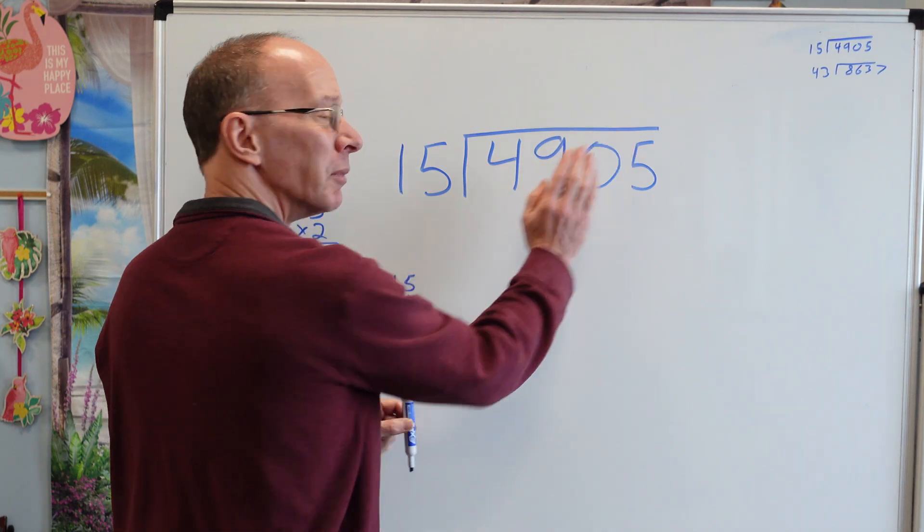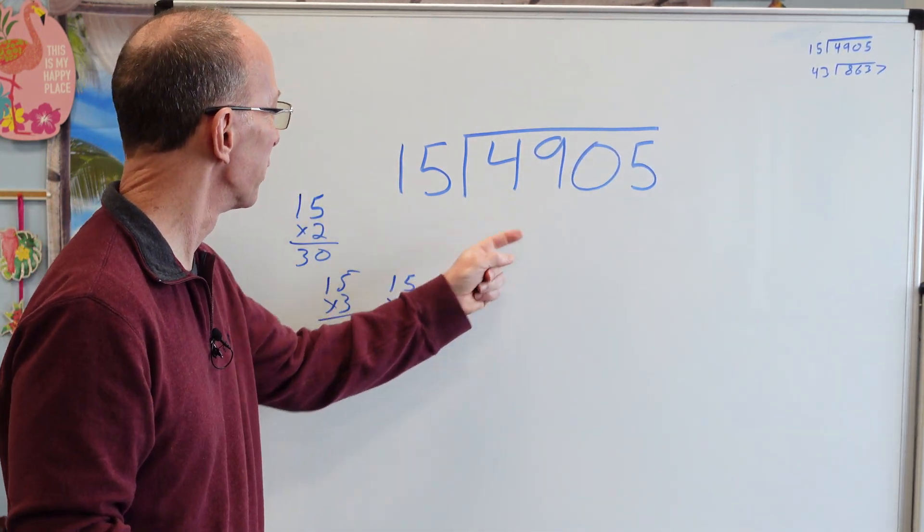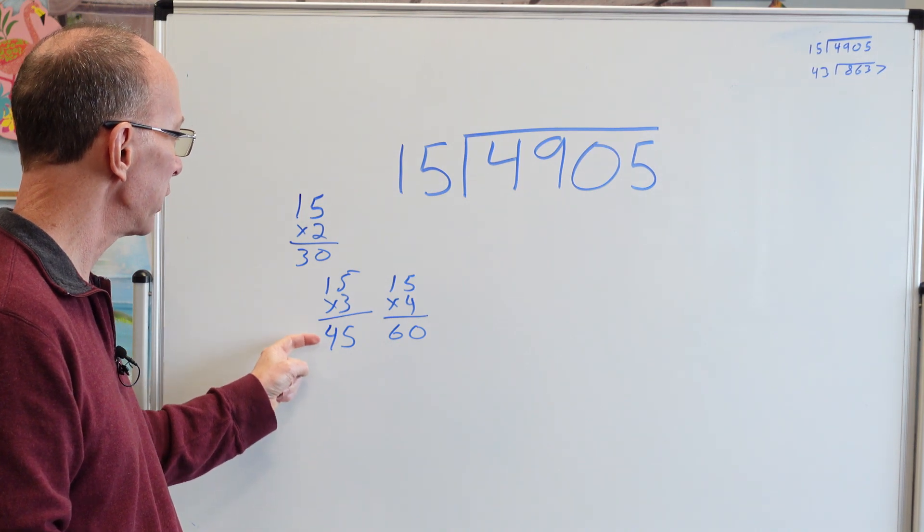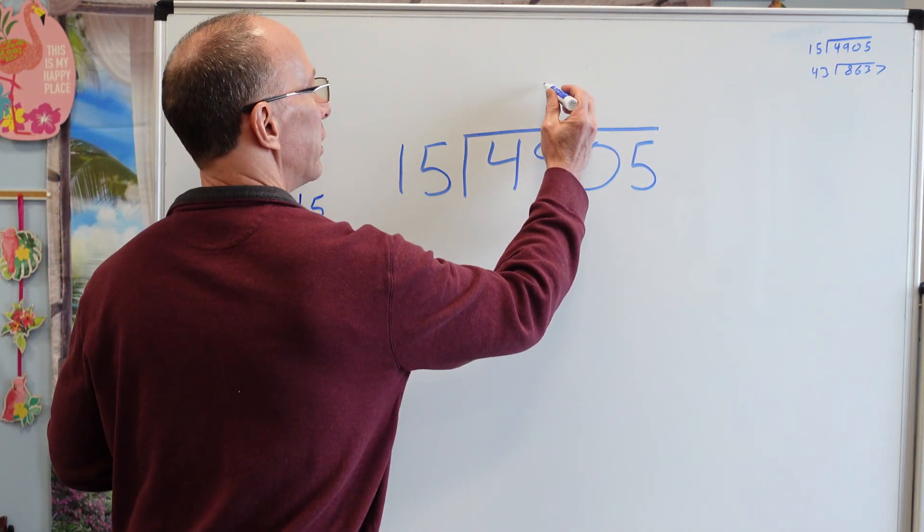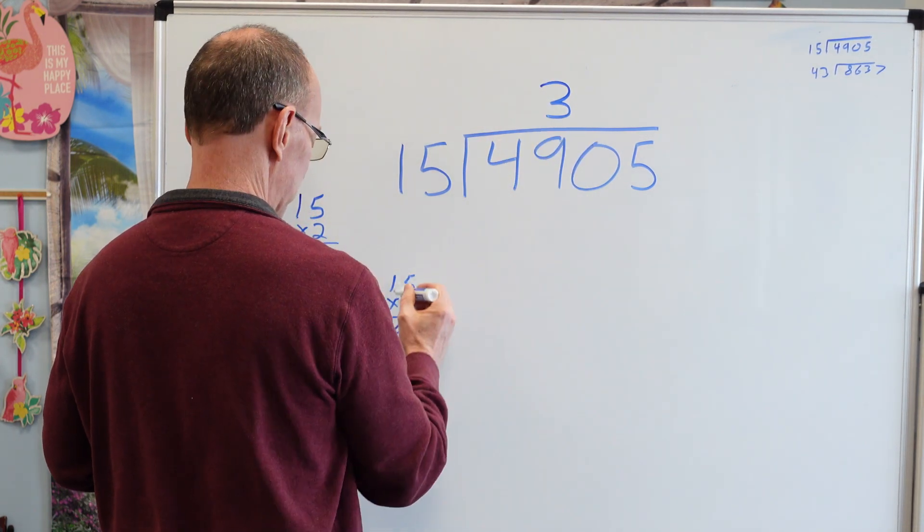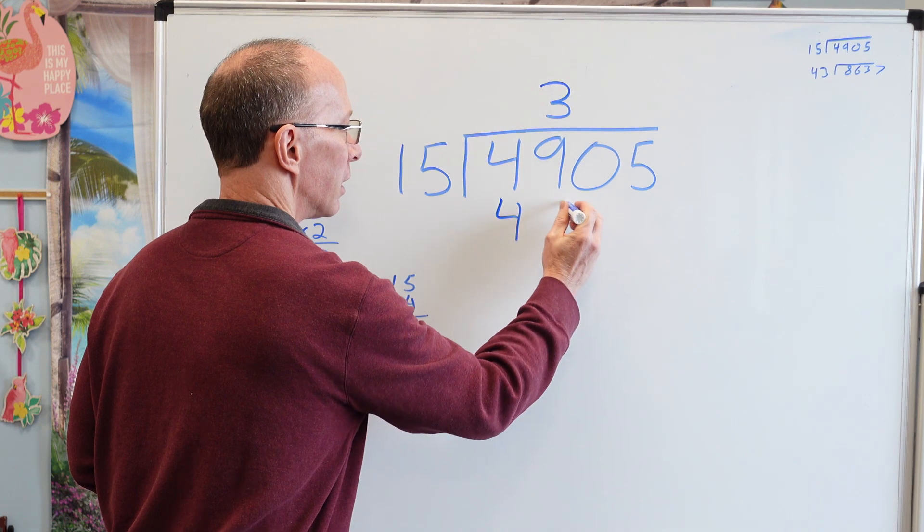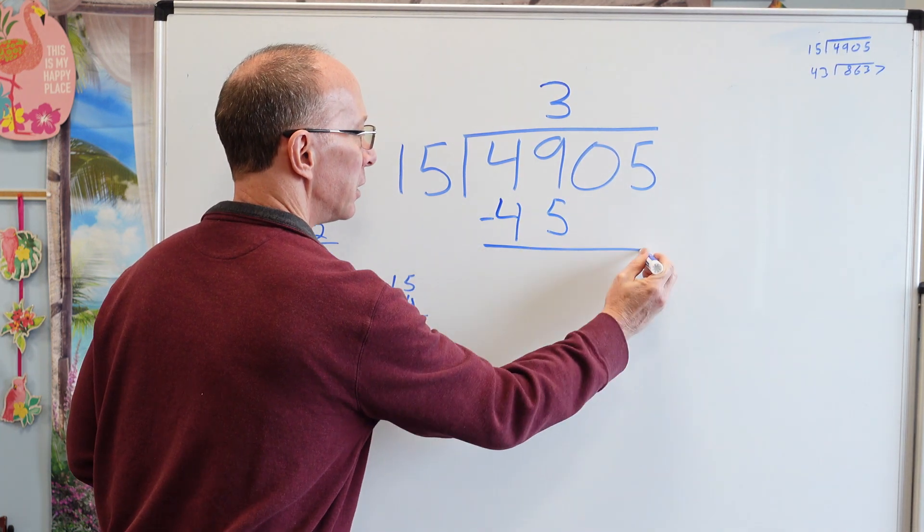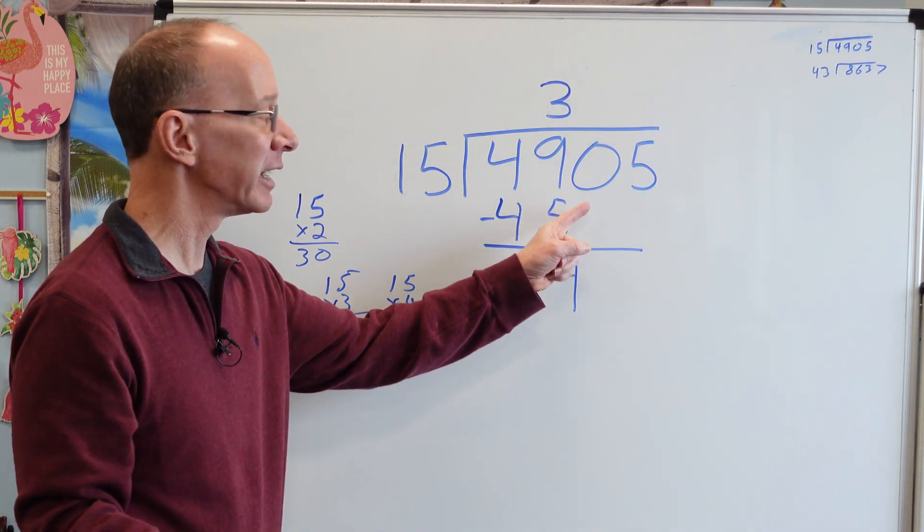So how many times can I put 15 into 4? Can't do it. Move to the next number. Remember, you can cover these up so it doesn't look too scary. How many times does 15 go into 49? 30, 40. I could put it in there three times. All right. So I'm going to put a 3 right here. 3 times 15 equals 45. All right. Subtract. 9 minus 5 equals 4. Bring that next number down.